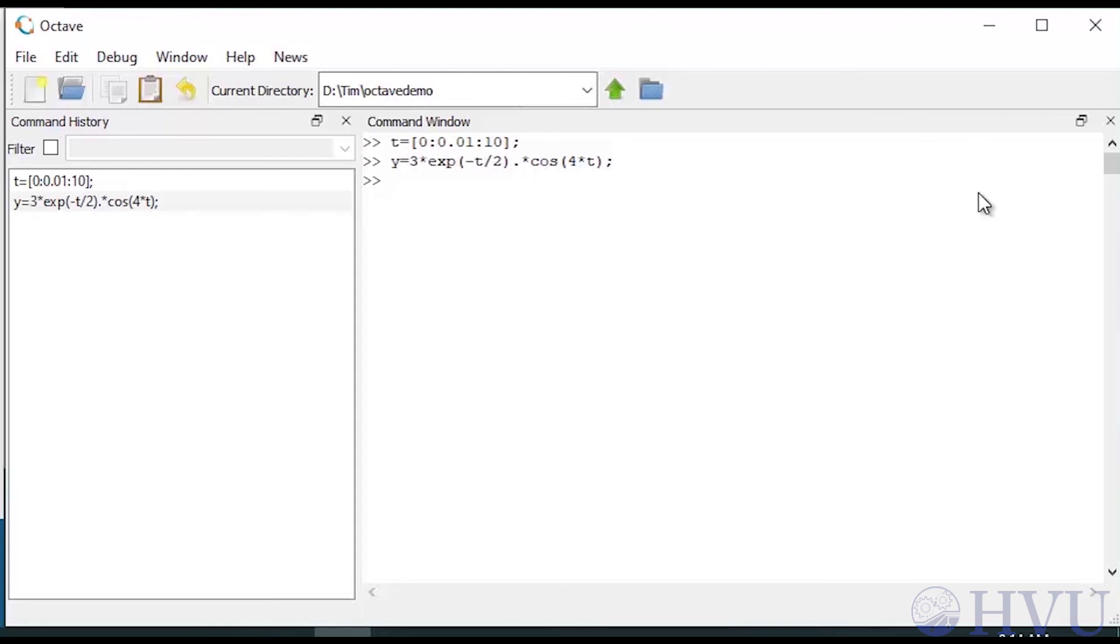I'll follow this with a semicolon, since I don't particularly want to see all these variables scroll by. Now my values are in the workspace. If I actually do want to see them, I can type the variable name and press enter.